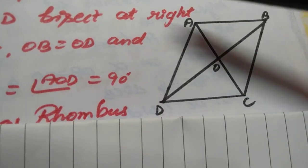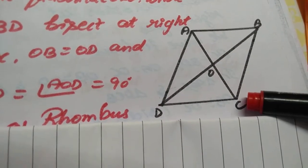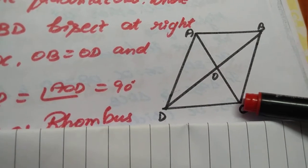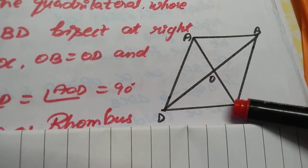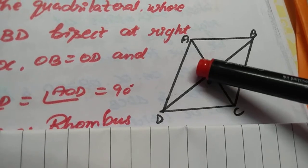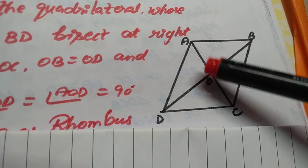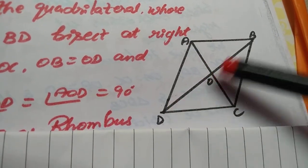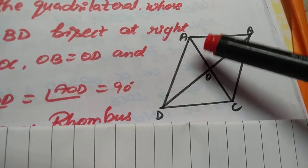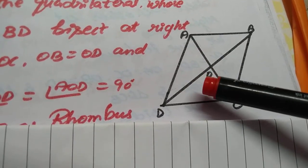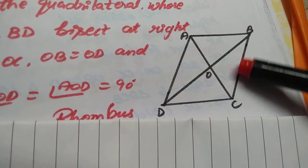Consider triangle AOD and triangle BOC. Write all the similarities you have found. Angle AOD and angle BOC are 90 degrees. As it is a bisector, AO equal to CO and DO equal to BO. Hence, triangle AOD and triangle BOC are congruent to each other by SAS congruence. Hence, by CPCT I can say AD equal to BC.